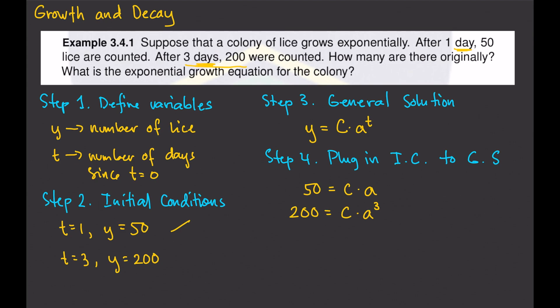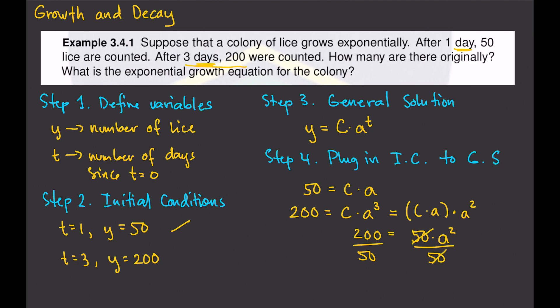Now we have two equations and two unknowns, and we can solve this by the method of substitution. Observe that we can write c times a cubed as c times a times a squared. But c times a is 50, so we can write that as 50 times a squared, which equals 200. Dividing both sides by 50 gives a squared equals 4, and taking the square root gives a equals 2.